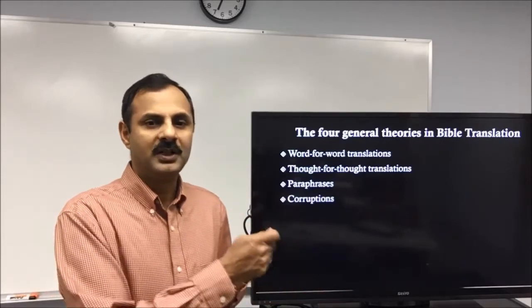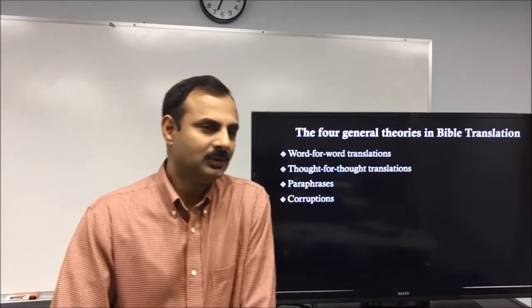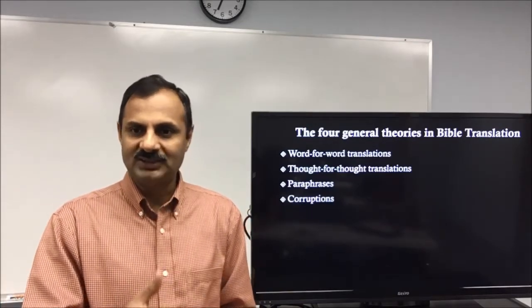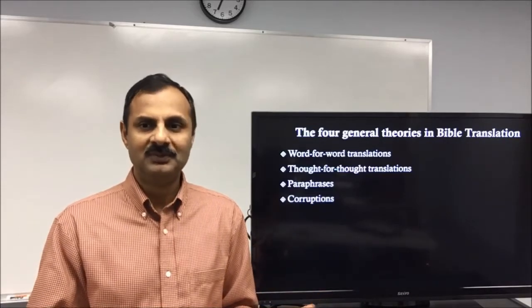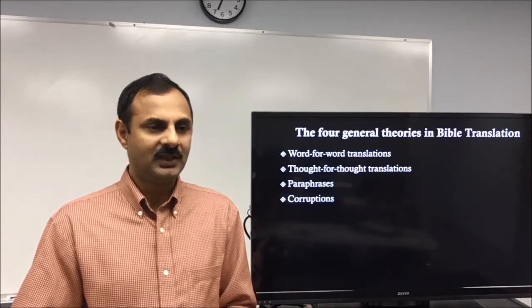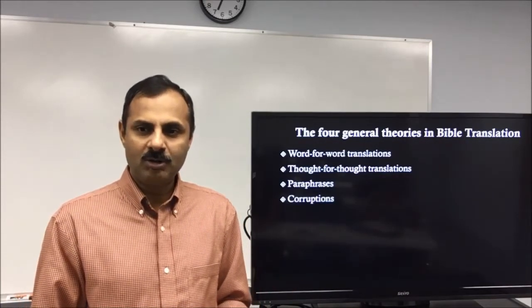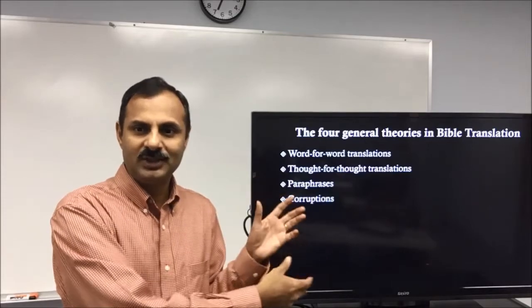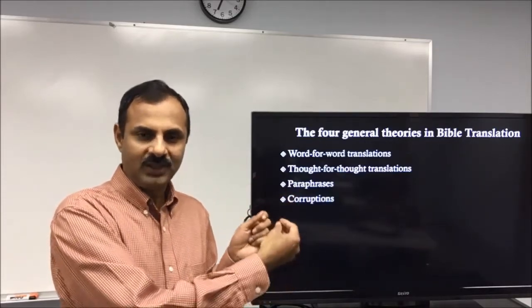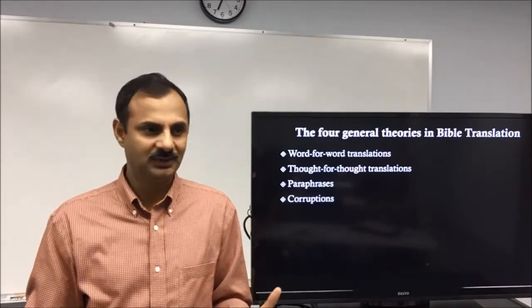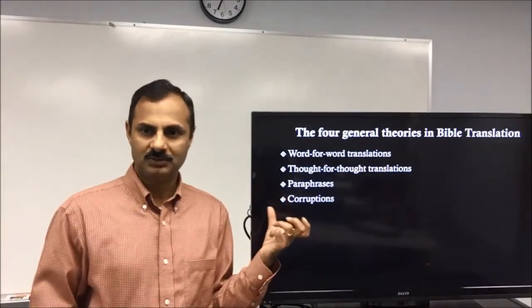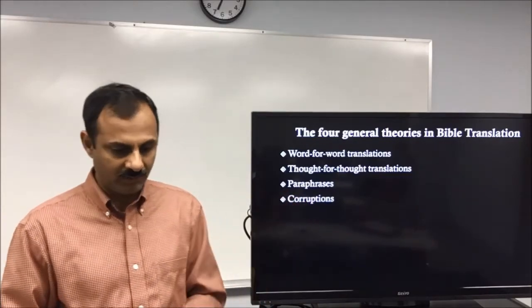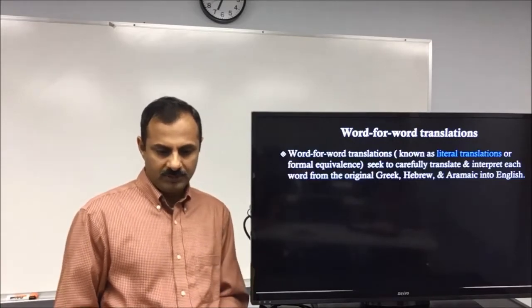The fourth is corruptions: people change the text, introduce wrong methodologies, and try to defend their own views. For example, some people deny the deity of Jesus Christ. The Gospel of John clearly portrays the deity of Christ, but those who deny it attack at the translation level — they change words and meanings to write translations that favor their already-assumed theory. We call these corruptions, and I'm going to show you which Bibles are corrupted.